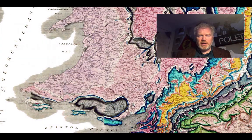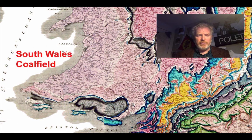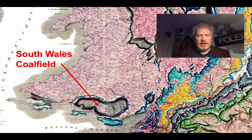The South Wales Coalfield has been known about for a very long time. This is an extract of William Smith's first geological map of England and Wales from 1815. You can see the South Wales Coalfield here, marked in grey, is already quite well known in terms of its extent and its structure, even where the rest of Wales is a bit of a blank slate.